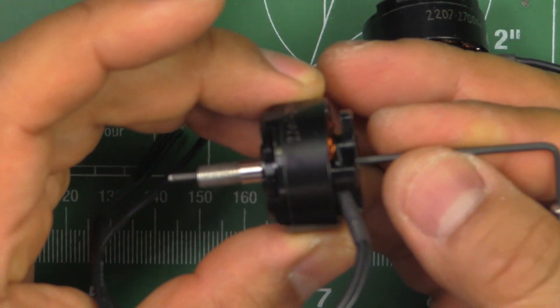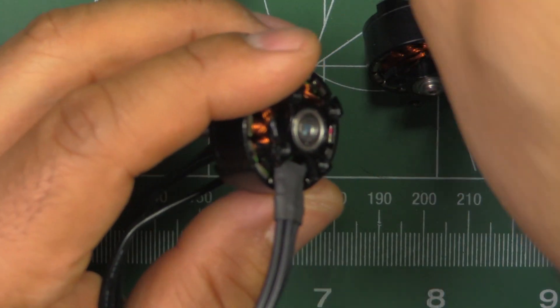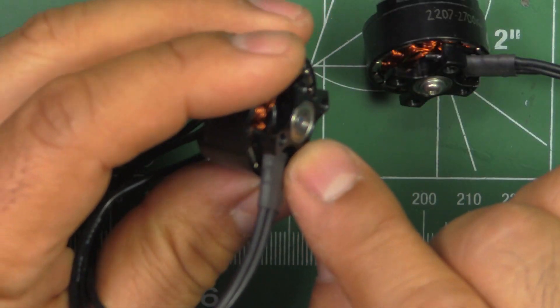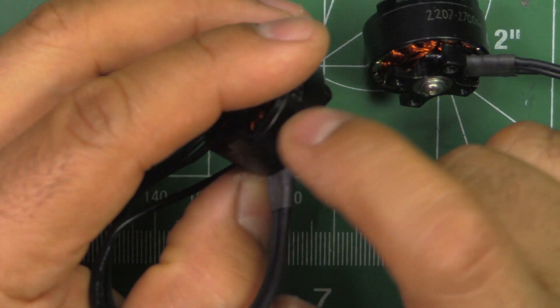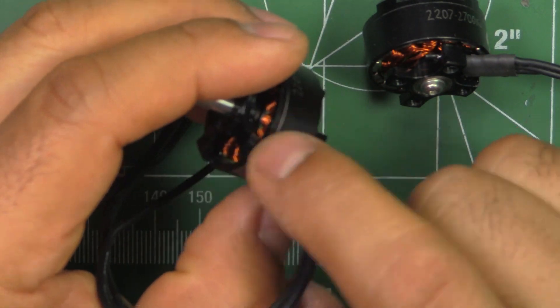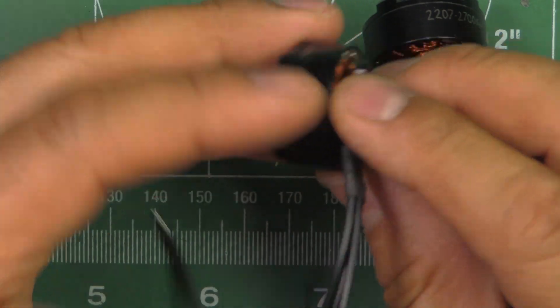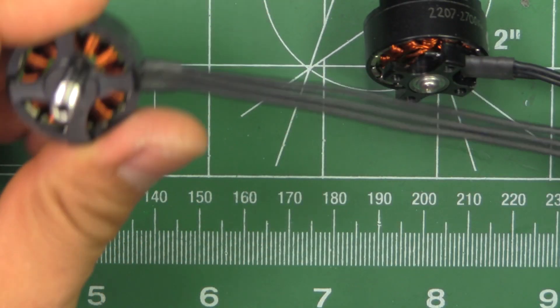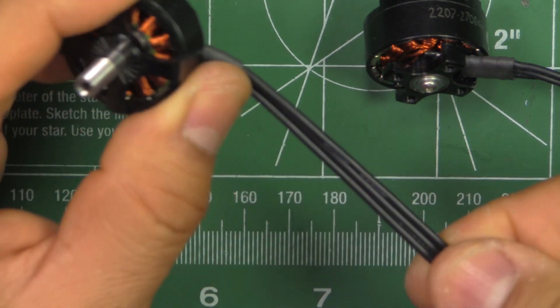So here's the shaft as you can see. It's hollow all the way through which is pretty good. It makes it light and also from what I understand it removes stress points at the weakest point, so it kind of helps prevent the shaft from shearing off on hard impacts. So the motor comes with about 150mm of wire leads, motor leads.